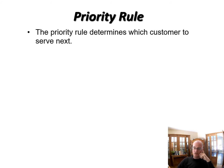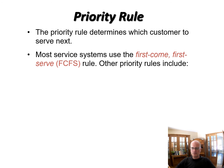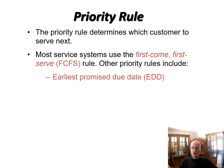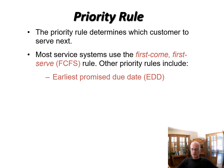The priority rule determines which customer we serve next — how do we prioritize who gets served. Most service systems use the first come, first served rule: you're in line, you get to the front, you are next. It has the highest perceived fairness and is the easiest to manage. Another rule is earliest promised due date: if you're at a doctor's office and appointments have run late, even if you arrived later than someone else, your earlier appointment time means you go in first.